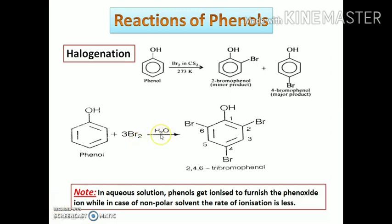In aqueous solution like water and acetic acid, phenol gets ionized to give phenoxide ions which share the lone pair of electrons with the aromatic ring, activating it further for electrophilic substitution due to enhanced electron density. Also in polar solvent, it favors the formation of bromine ions which act as electrophiles. In non-polar solvents, phenol ionizes in very small amounts and the hydroxyl group donates electrons to the benzene ring only to a small extent, so only mono-substituted products are formed.